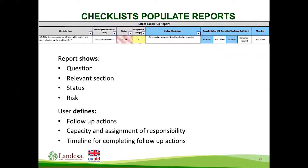Once each checklist is completed, the tool will automatically generate a report on the next tab. The report will include all questions with a completion status of less than 51% or a risk rating of 2 or higher, highlighting areas where a company has made moderate, minimal, or no progress, as well as areas posing heightened risks. The report will be automatically populated with the checklist question, the section it came from, the status, and risk. The user will then define required follow-up actions, the internal and external capacity required, and a realistic timeline for completing those actions.